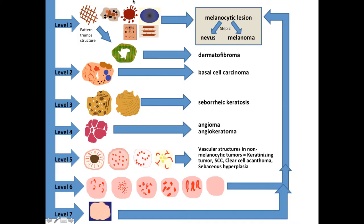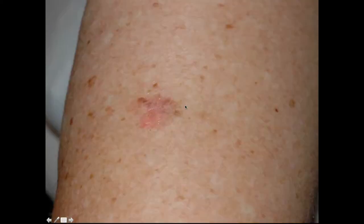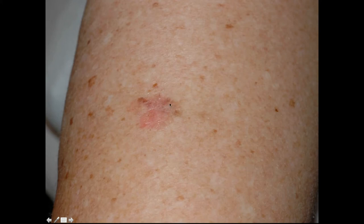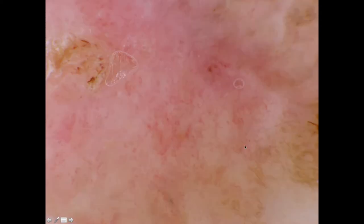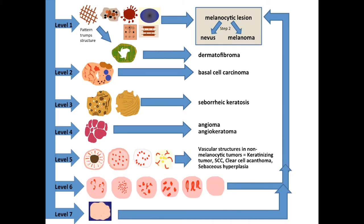First question: is this lesion melanocytic or non-melanocytic? Do we see network? Yes, we see network at the periphery. When we see network only at the periphery and not within the lesion, we need to check if there's sun-damaged skin with freckling. We can't say with 100% certainty that this reticulation belongs to the lesion or the background skin. Let's presume if it is part of the lesion, it would be melanocytic, and we move on with that assumption.